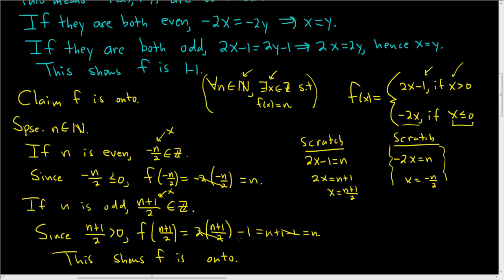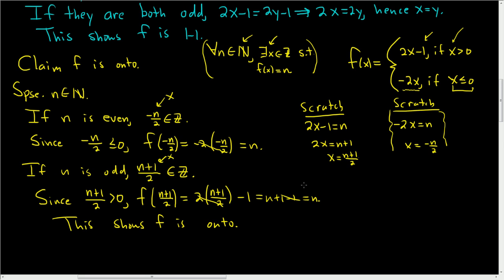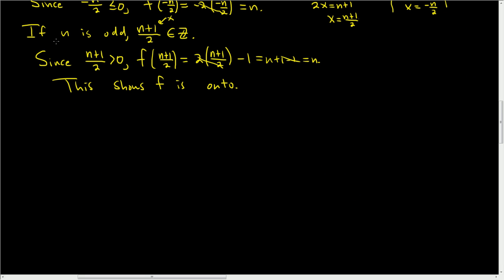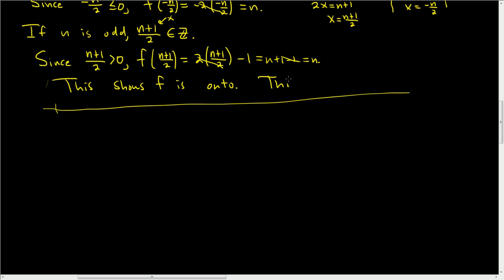To finish, we're going to find the inverse function. Since f is 1-to-1 and onto, this shows f is bijective. The proof is done.